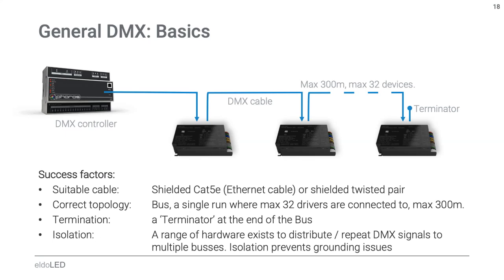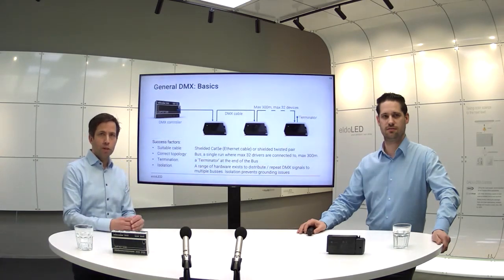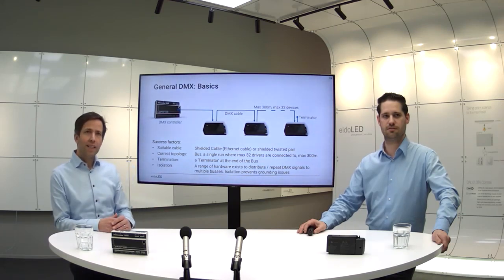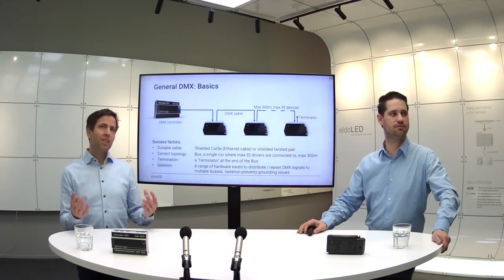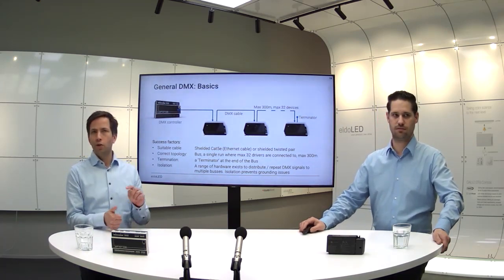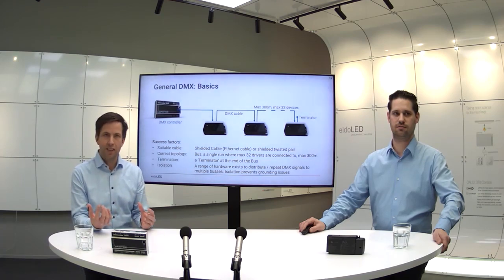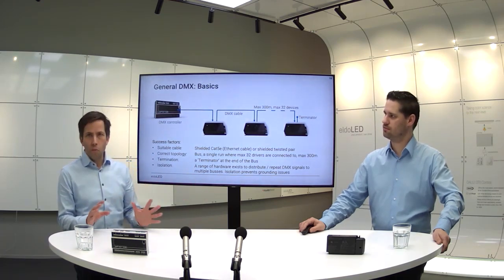The basics of a DMX installation: you have one controller sending a DMX signal to up to 32 receivers on a single line. This DMX cable is a special cable — you cannot use just any cable. It needs dedicated wiring and follows a bus topology: a single line from controller to the first, second, third receiver, and so on. At the end you need to add a terminator. Key success factors: use suitable cable, correct topology, terminate the line, and handle isolation correctly. When using quality equipment like Eldo LED or Pharos, isolation is taken care of for you.